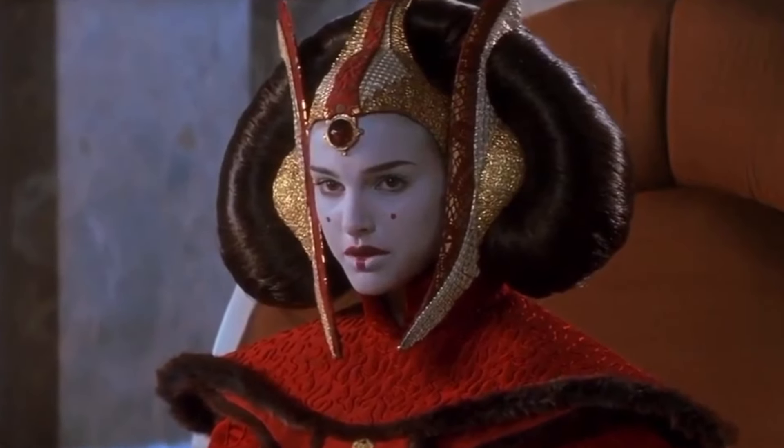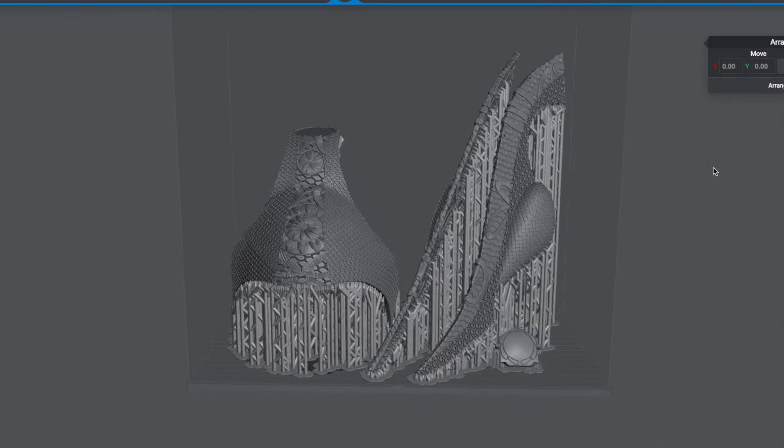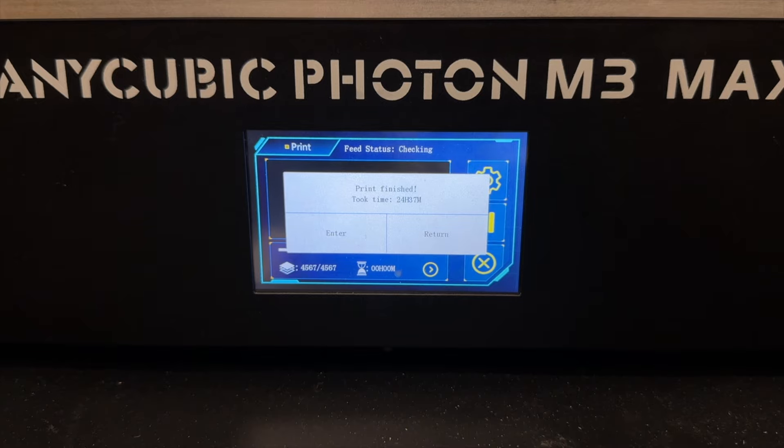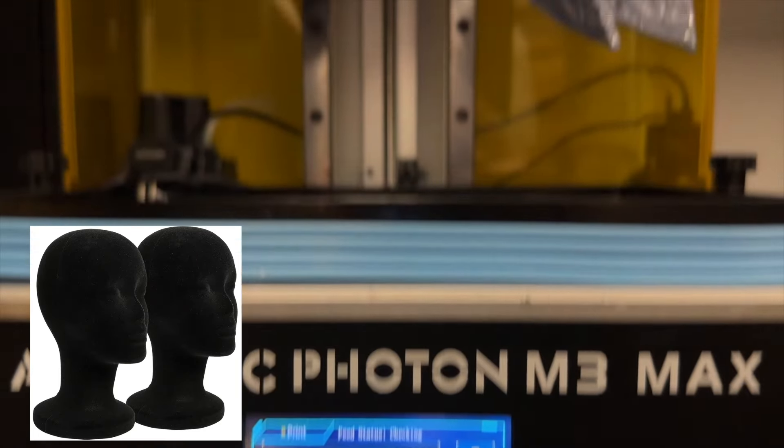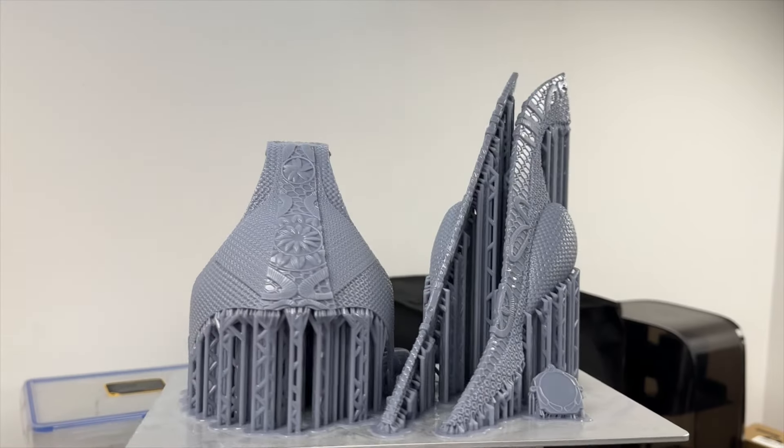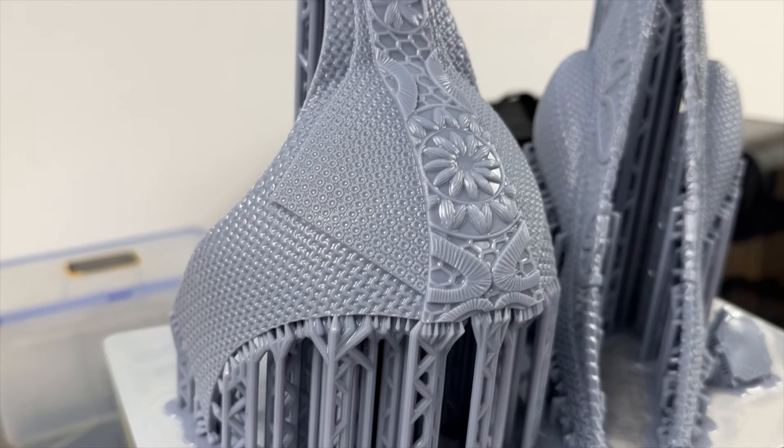And last but not least, Queen Amidala's tiara. This is easily one of the most iconic costume pieces from the Phantom Menace, and I was so thrilled when I found this file. I rescaled the pieces to fit one of these foam heads to display it later, but I also resized the side fin pieces to be about 15% larger than the middle crown part.